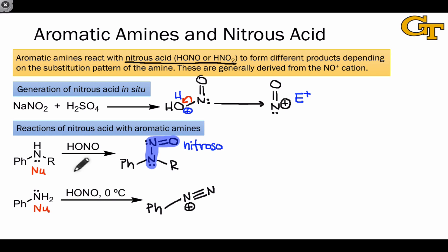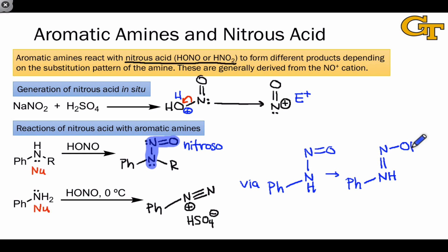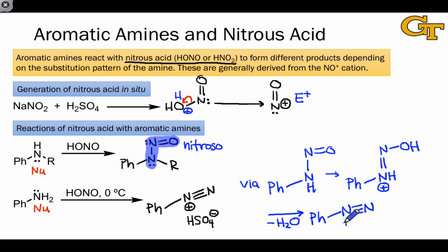The counter ion of the diazonium depends on how the nitrous acid was generated — if we used NaNO2 and H2SO4, it's either NO2-minus or HSO4-minus. Returning to the nitroso example gives us a hint as to how this reaction proceeds. First, it seems likely that the primary amine forms a nitroso intermediate, establishing one nitrogen-nitrogen bond. Proton transfer then establishes the second nitrogen-nitrogen bond. Finally, the elimination of water through a few more elementary steps establishes the diazonium ion product with the nitrogen-nitrogen triple bond and positive charge on nitrogen.